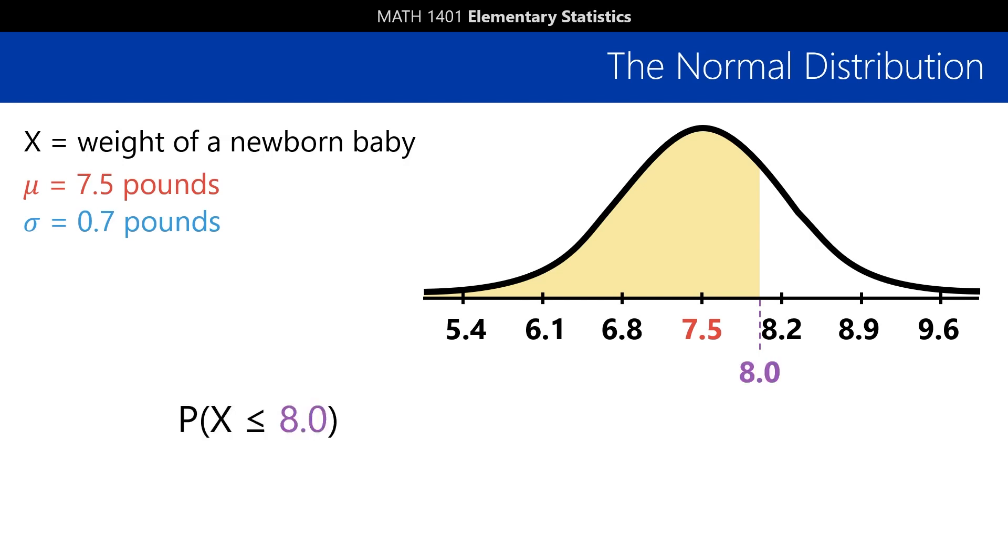For example, suppose we want to find the probability that a random newborn has a weight that's less than or equal to 8 pounds. Or, put another way, we're looking for the proportion of newborns with a weight of at most 8 pounds.